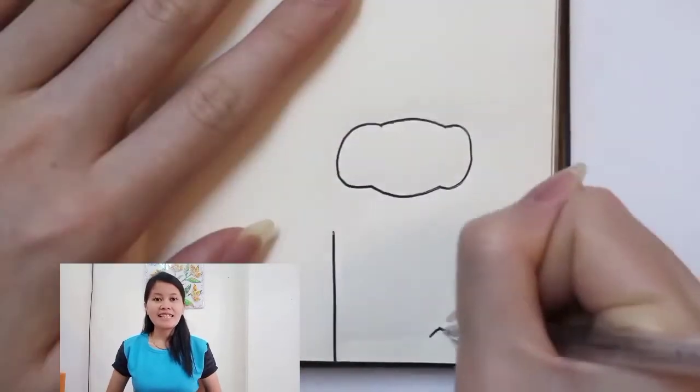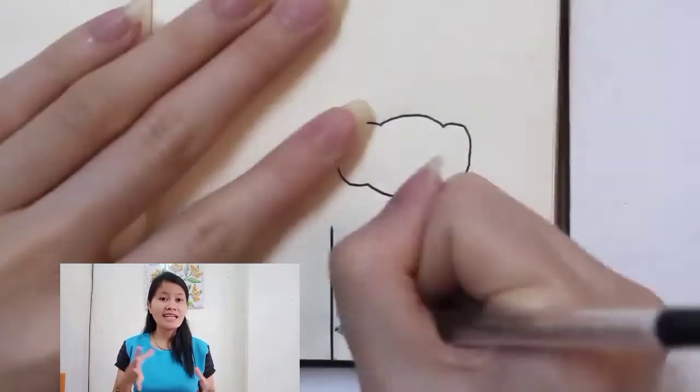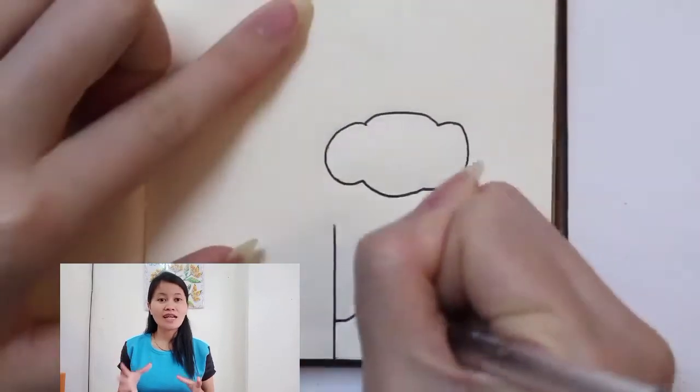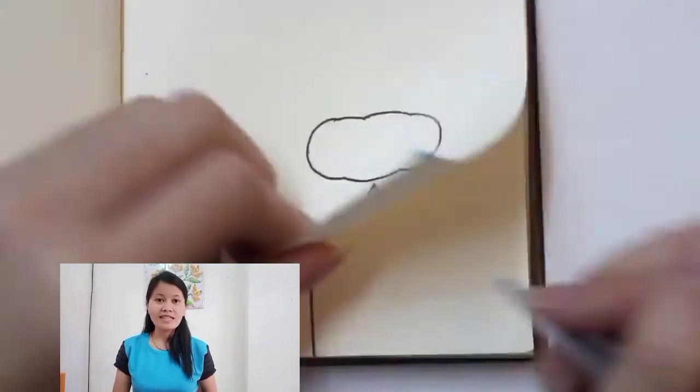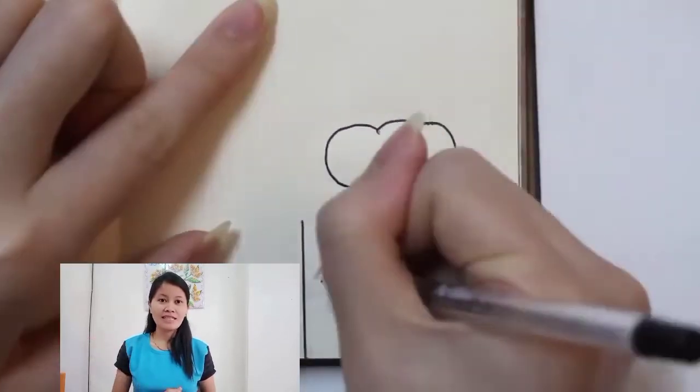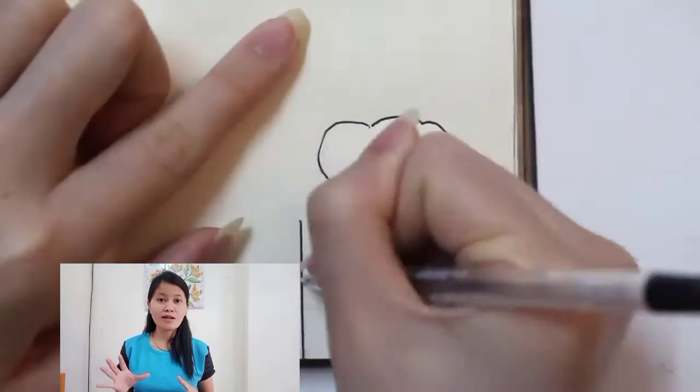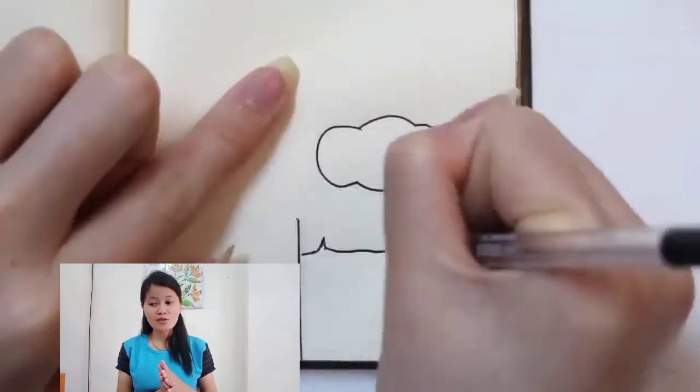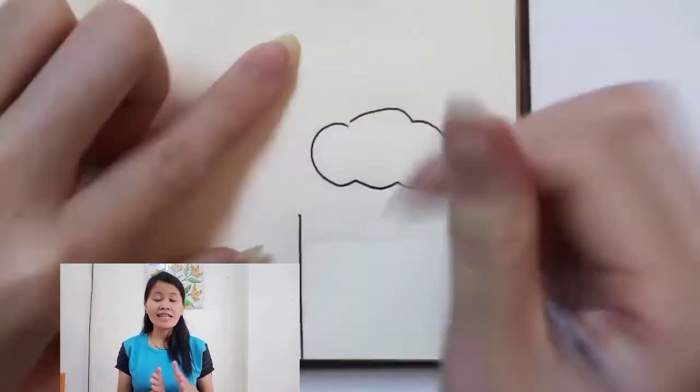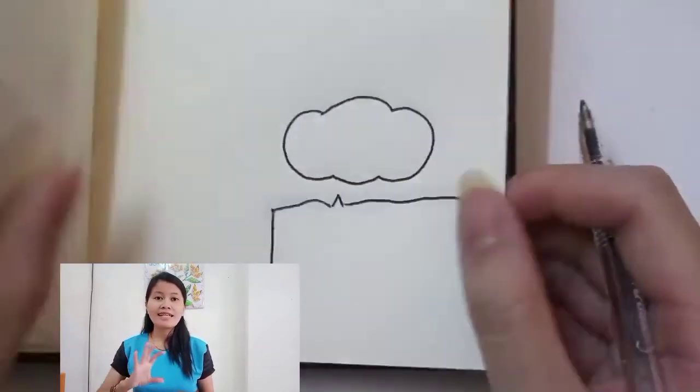Coba perhatikan, masih ingat kalian, ibu pernah menyampaikan bahwa animasi sederhana itu ditemukan dari kumpulan gambar yang disusun pada kertas kosong. Jadi tadi kalian sudah lihat di awal video pembelajaran, dan ibu masih menayangkan di videonya. Kalian perhatikan disitu bahwa sebenarnya animasi sederhana itu kita mengumpulkan kertas-kertas kosong, mungkin ada kertas di rumah yang tidak terpakai. Kita kumpulkan, baru kita menggambar di tiap lembaran kertas itu.